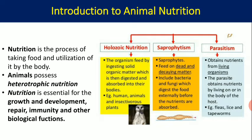Nutrition involves the production of energy and other food particles. Animal nutrition is heterotrophic in nature because animals are devoid of chlorophyll and cannot produce their own food — they depend upon other organisms for their food. There are several types of heterotrophic nutrition. The first one is holozoic nutrition.